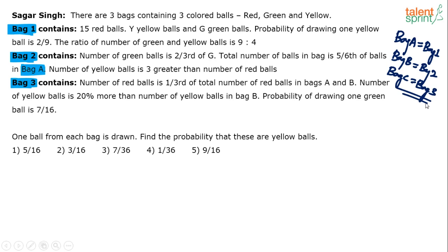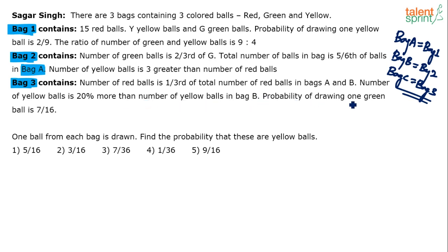For bag three: the number of red balls is one-third of the total number of red balls in bags A and B. The number of yellow balls is 20 more than the number of yellow balls in bag B. The probability of drawing one green ball from bag three is 7 by 16.